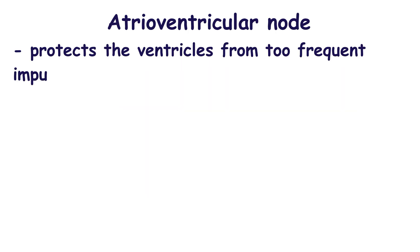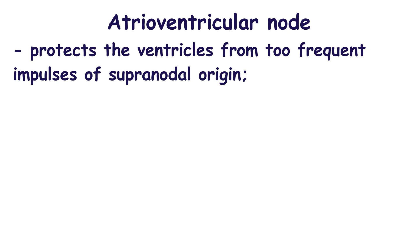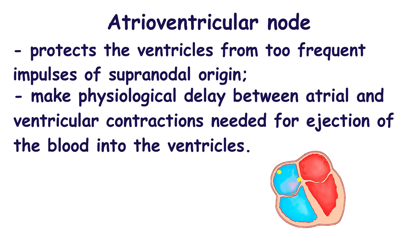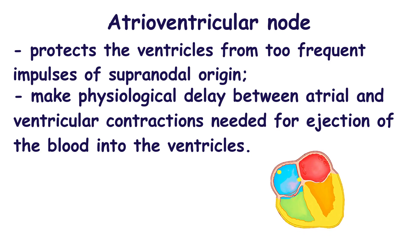The atrioventricular node prevents the ventricles from too-frequent impulses of supranodal origin. It also causes a physiological delay between atrial and ventricular contractions. During this delay, the atria contract and blood is ejected into the ventricles.